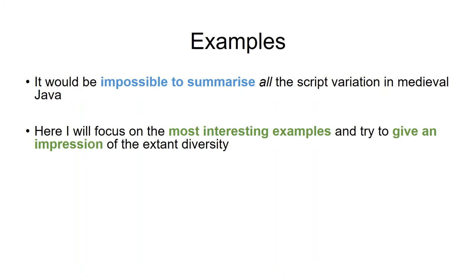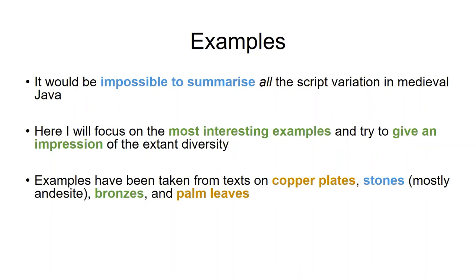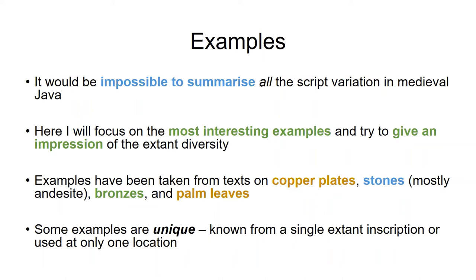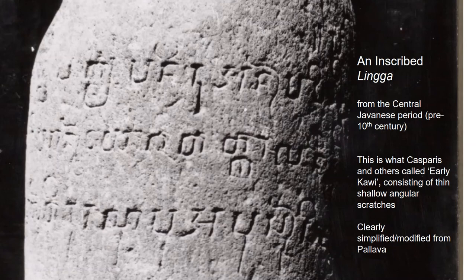I'm going to focus on the most interesting examples and try to give an impression of what's out there. Most of the examples have been taken from copper plates, stones — mostly andesite because it's such a volcanic island — and bronzes, which are easily the strangest. Some of the examples are unique, known only from one inscription, one location, or one or two locations over a course of a couple of decades.